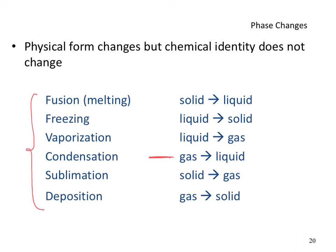A great example of sublimation is mothballs — if you don't know what they are, look for them in the laundry section of a store. They are kept to prevent silverfish and other insects from attacking your winter clothing. Deposition is the reverse — gas to solid — such as the formation of frost.